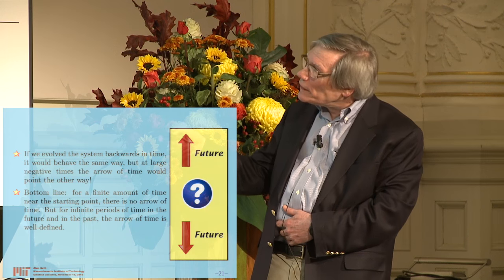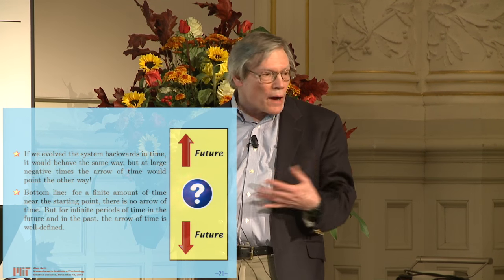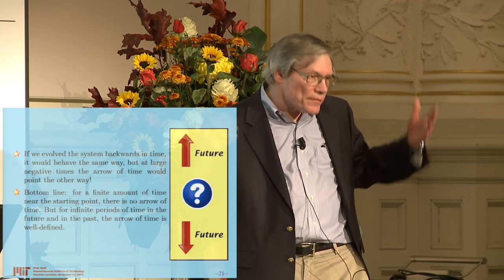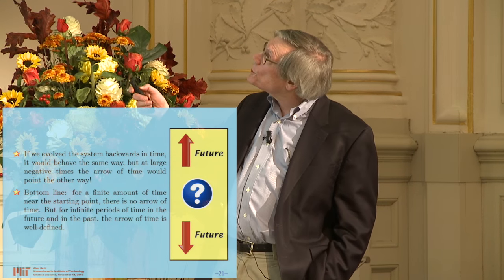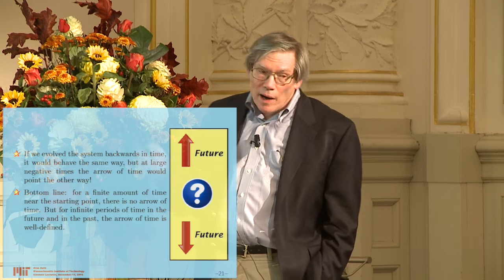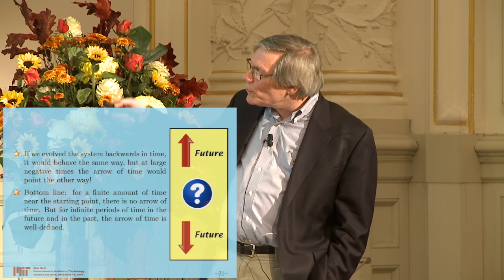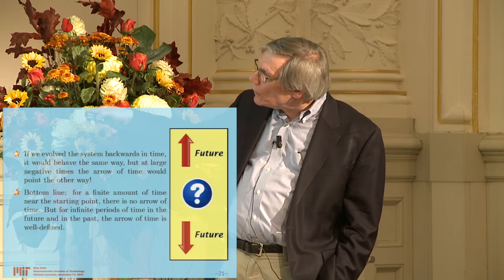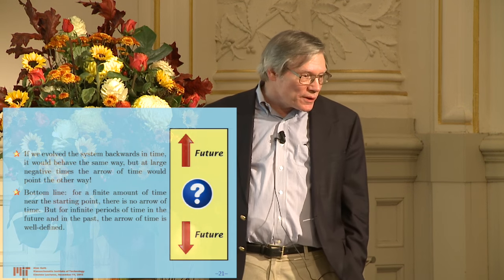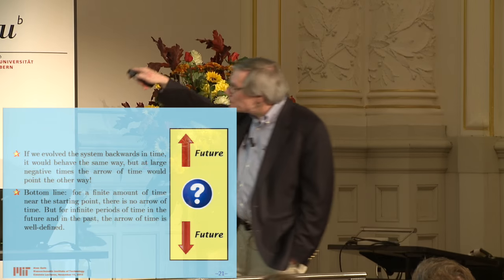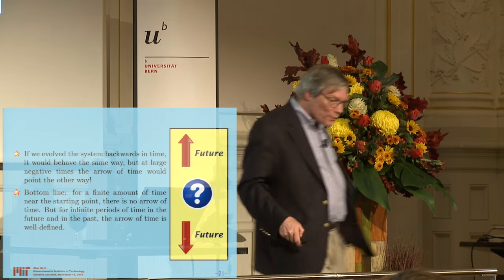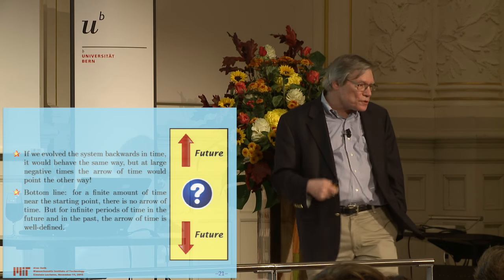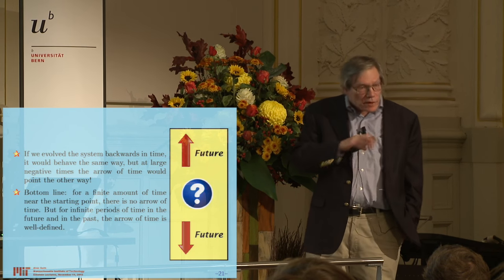The bottom line is that for a finite amount of time near the starting point, there will be no arrow of time — things will just happen randomly, entropy will increase in some places and decrease in others without any particular direction. But in the far future there will be a well-defined arrow of time where entropy gets larger. And if we look to the negative times, there will also be a well-defined arrow of time, but in the reverse direction. If you were living in the negative-time region, you would simply say that the future was the values of time below in this diagram — you would naturally choose the opposite definition of what's positive and what's negative time, and everything would seem completely normal.